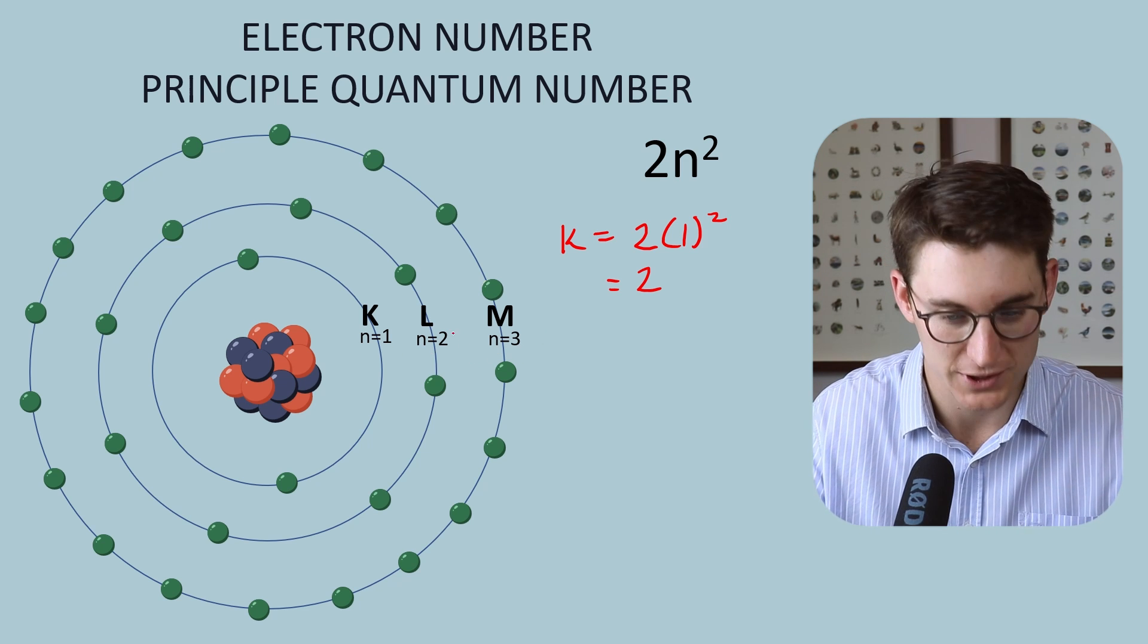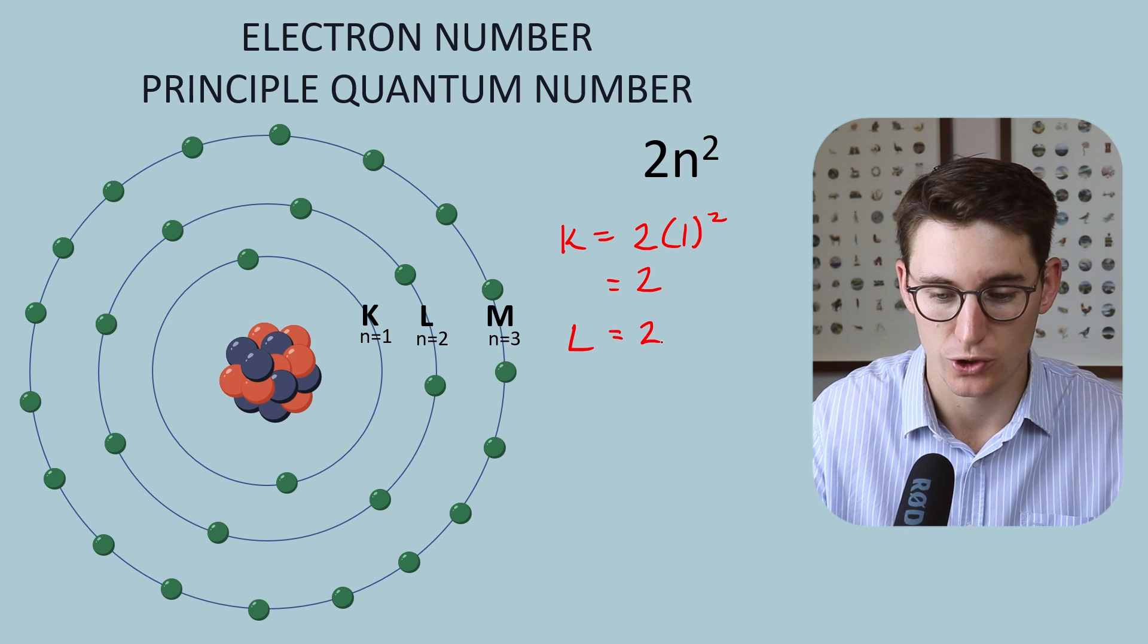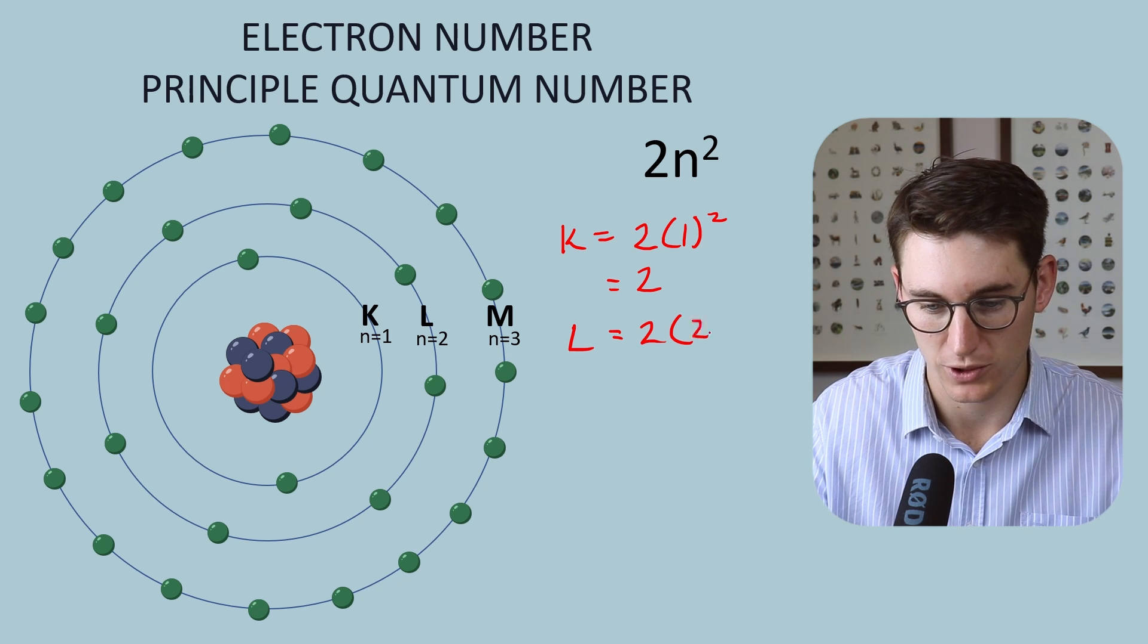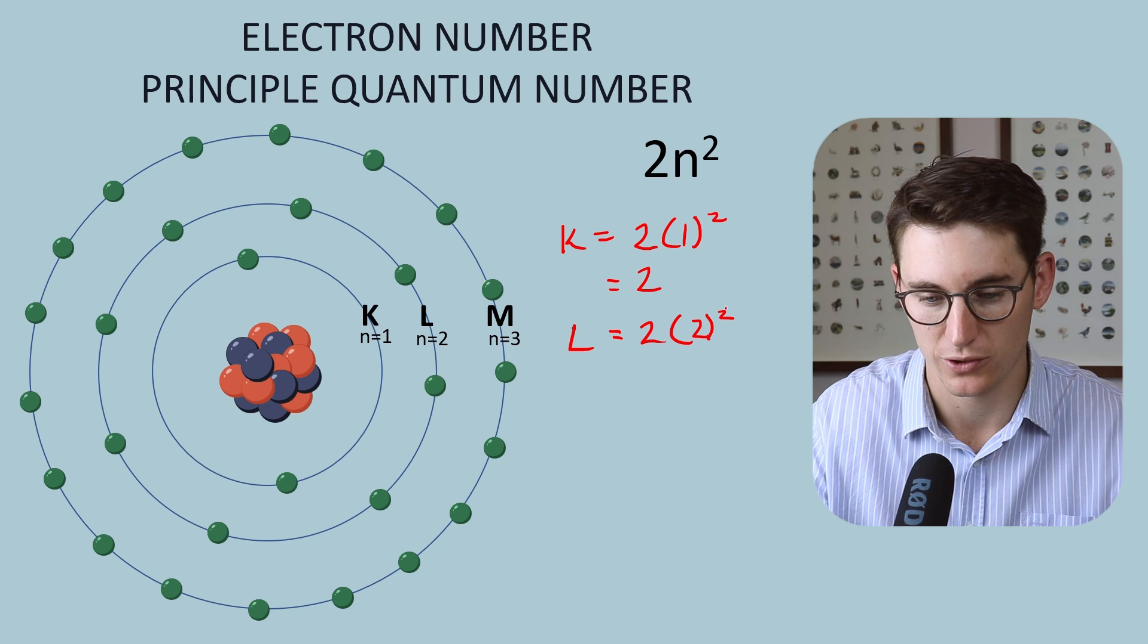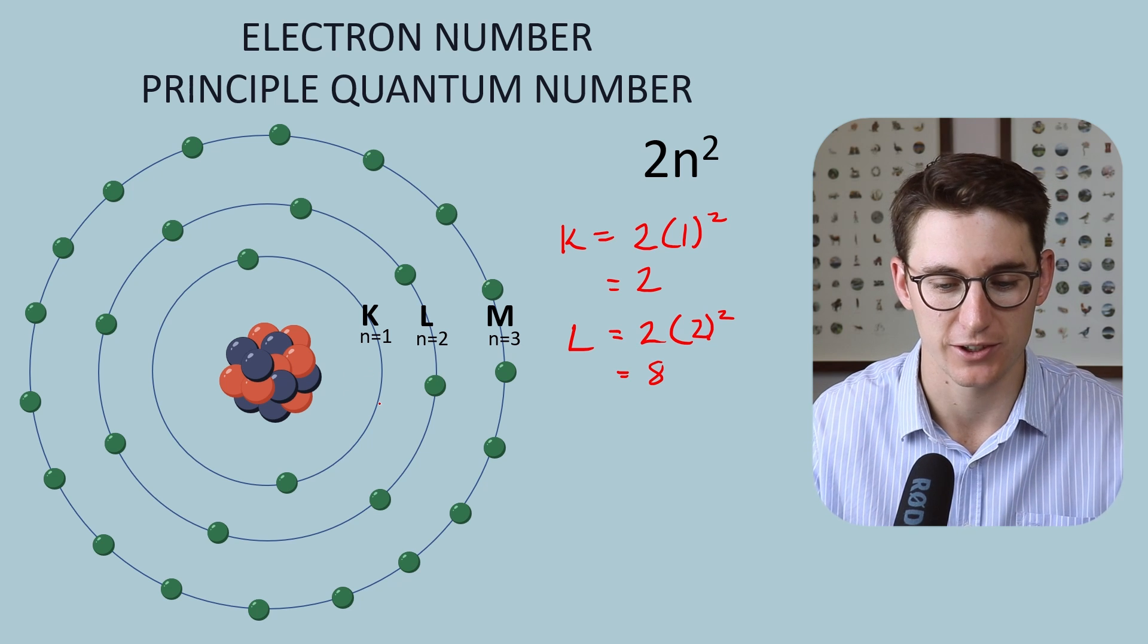In our L-shell, our principal quantum number is 2. So our L-shell can house 2 times our principal quantum number, which is 2 to the power of 2. This is 4. 2 times 4 is 8. There are 8 electrons within our L-shell.